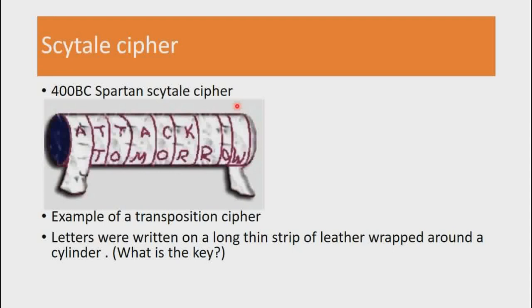Now with the Scytale cipher, letters were simply written on a long strip of leather wrapped around a cylinder. Which means if you want to encrypt a message, you can take a piece of paper, for example, and wrap it around a cylindrical object. Having done that, you can then write your plaintext message.